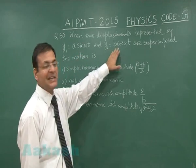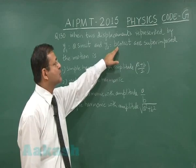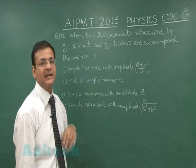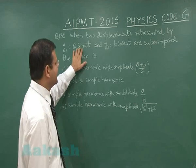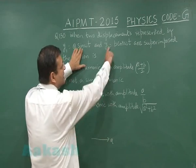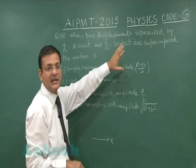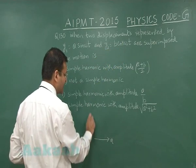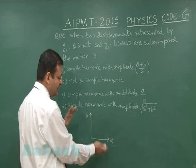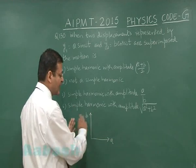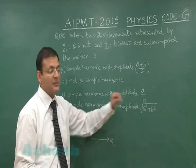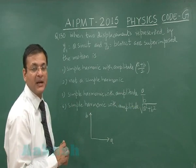Everything should be represented in terms of sine. Since y2 is a cosine, it can be written as b·sin(ωt + 90°). Representing as vectors, a is along the x-axis and b makes an angle of 90° with the x-axis. Adding these two vectors, the resultant amplitude is simply the Pythagorean sum: √(a² + b²).